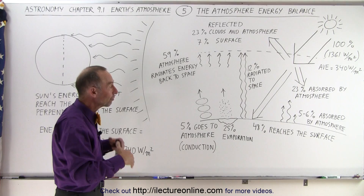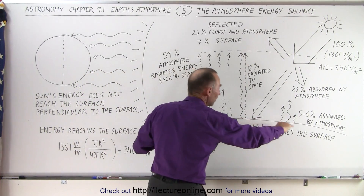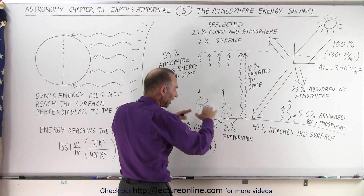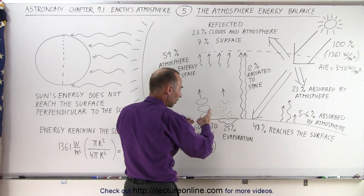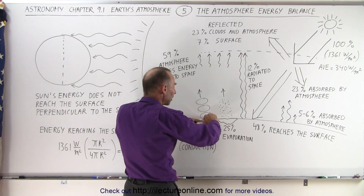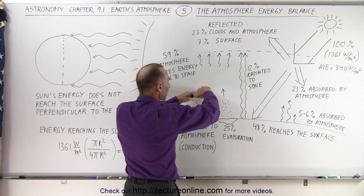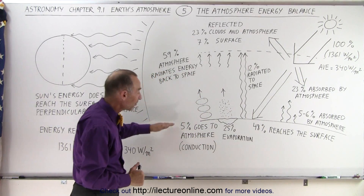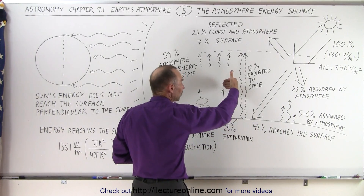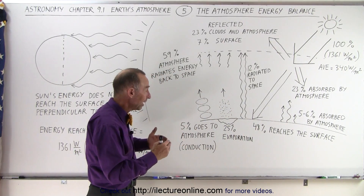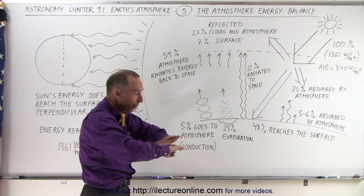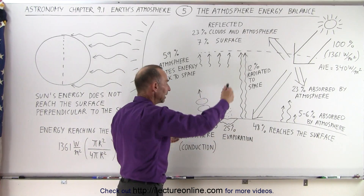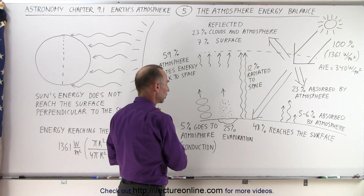As the surface warms, it does various things. Part of the energy gets put back into the atmosphere by atmospheric molecules hitting the warmed surface, getting warmer through collision, and then as the gas heats up it expands, rises higher into the atmosphere, depositing heat from the surface into the atmospheric region — that's about 5%. About 25% is put back into the atmosphere through evaporation, an enormous amount of energy taken from heating the vast oceans and bringing that energy into the atmosphere. So a total of about 30% of the energy from the Sun is put into the atmosphere through conduction and evaporation.